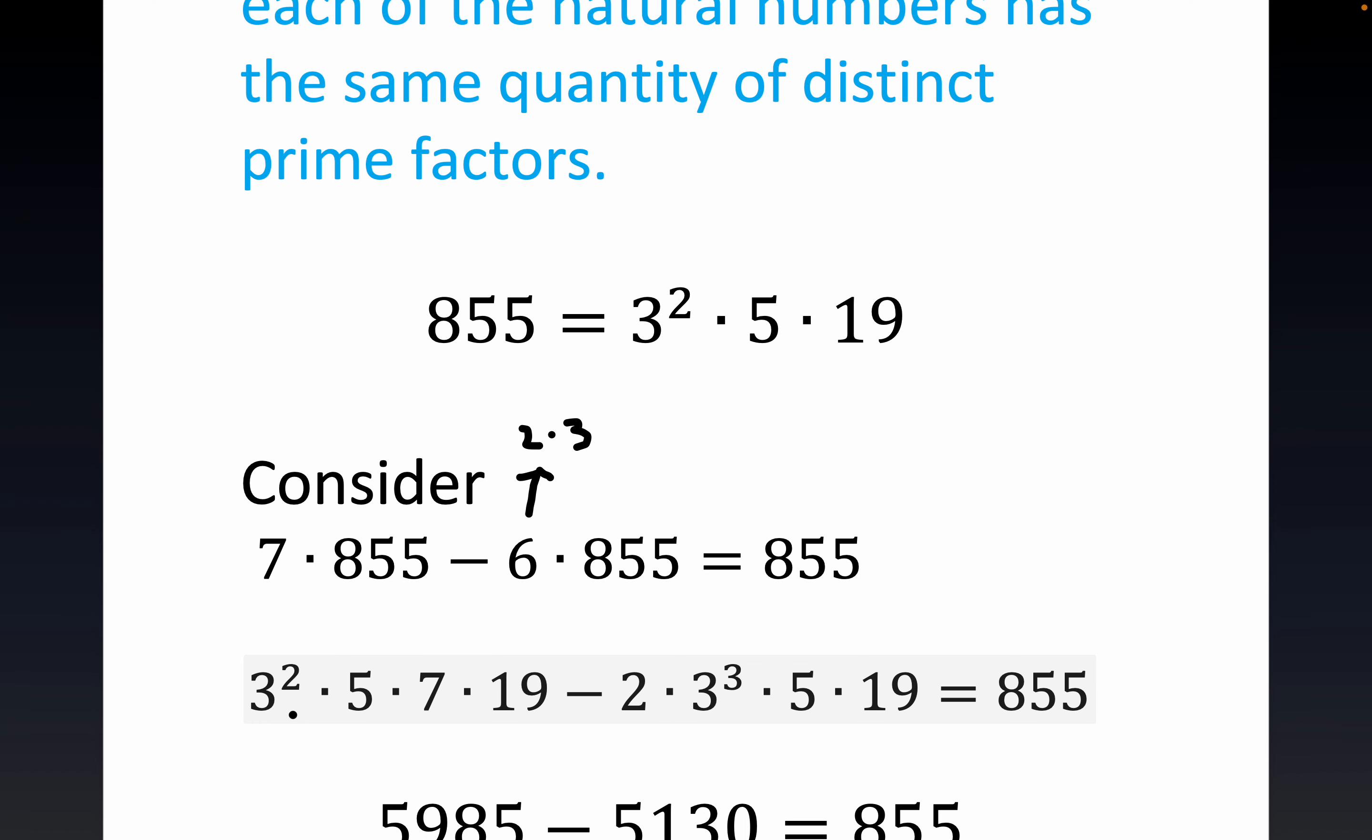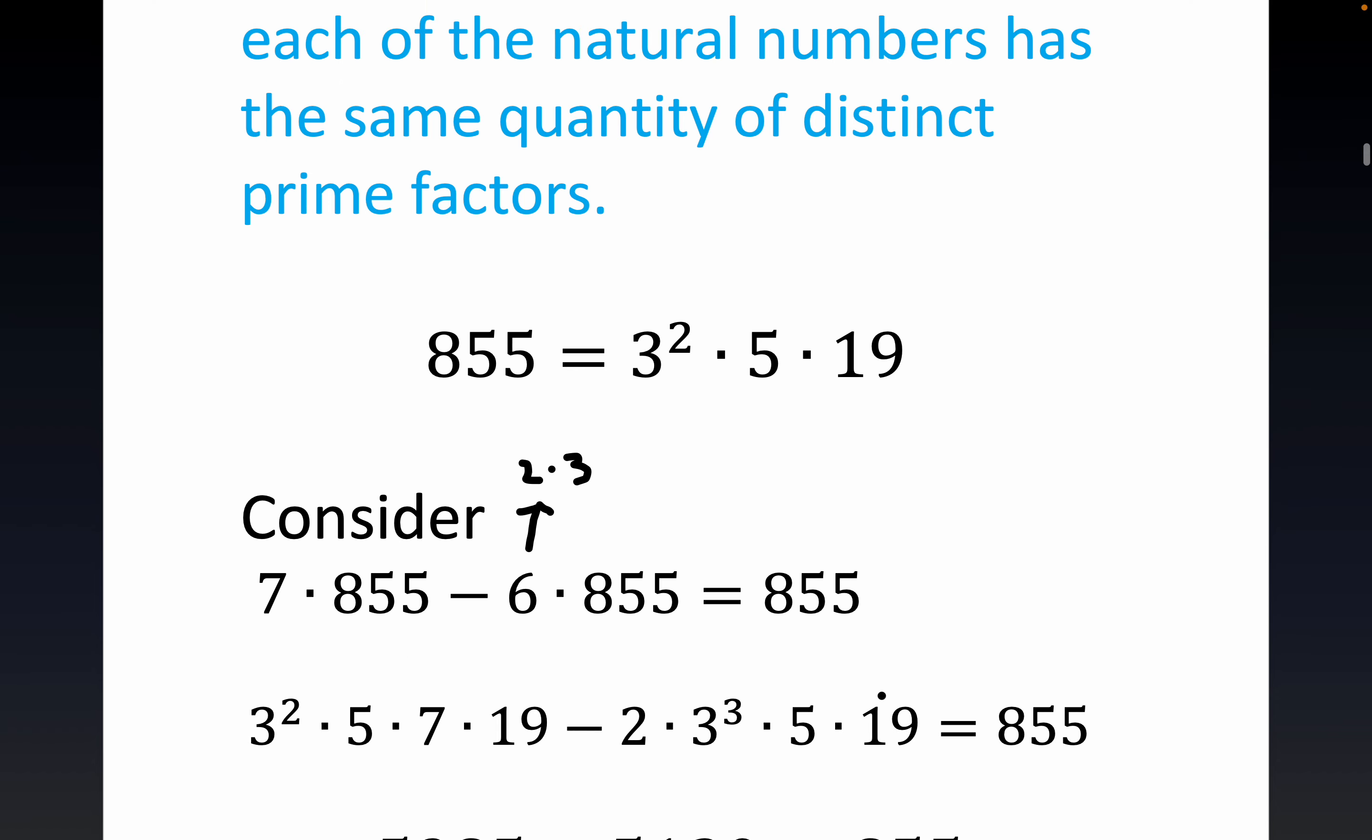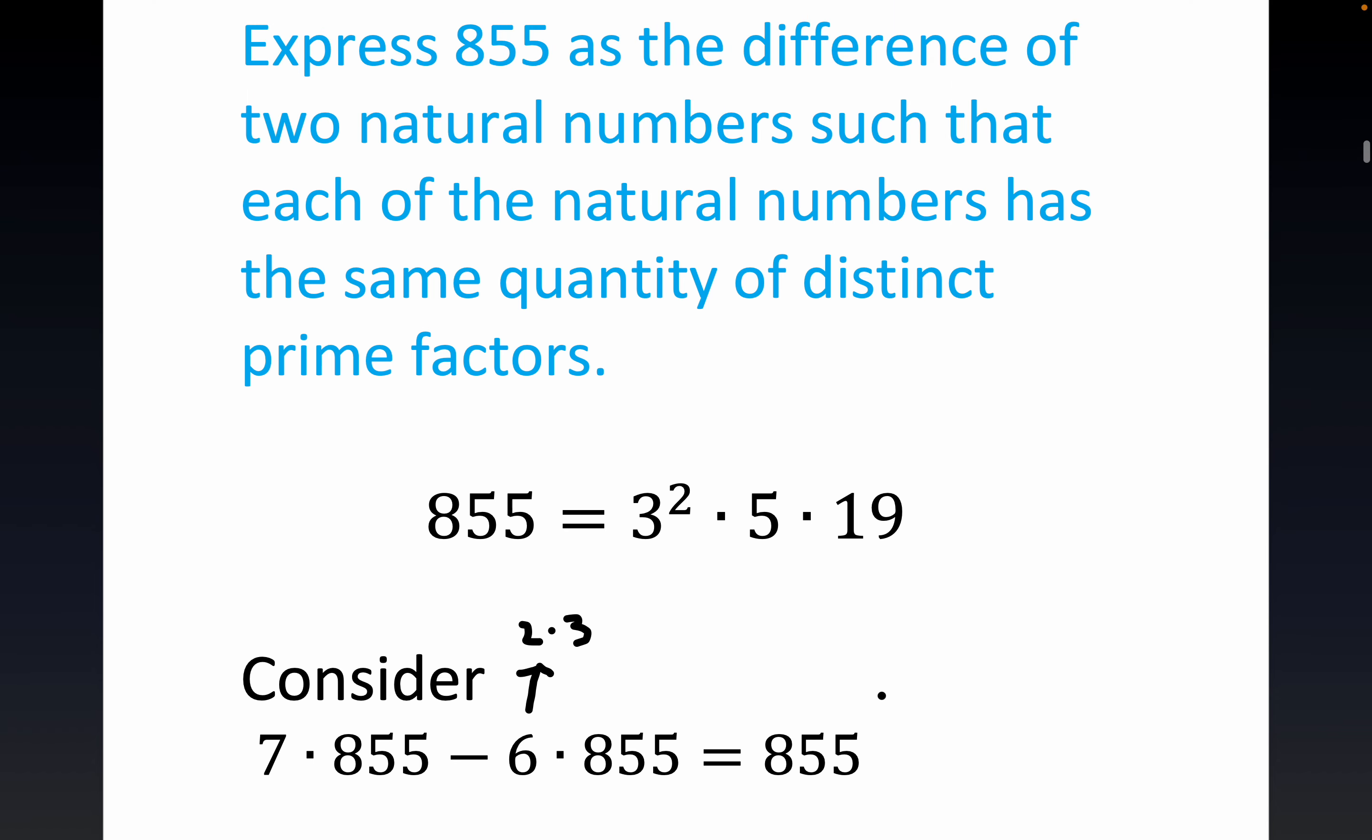But you have the same number of prime factors. Here you have 3, 5, 7 and 19. That's 4 prime factors. Here you have 2, 3, 5 and 19. Those are 4 prime factors. And that's all we were trying to do. Express the number as the difference. The minus sign means difference.